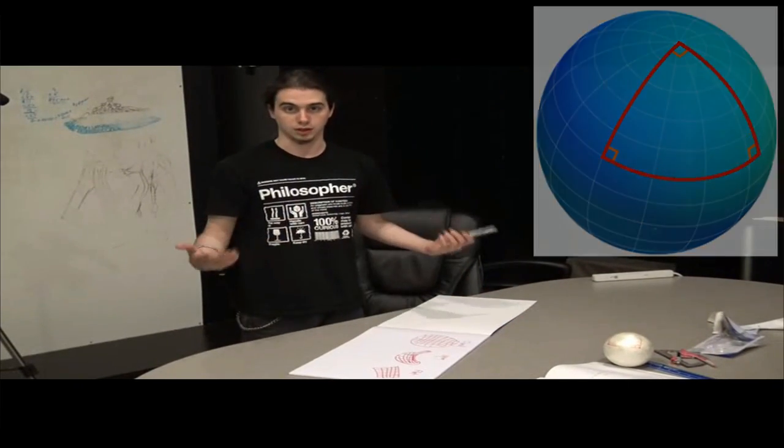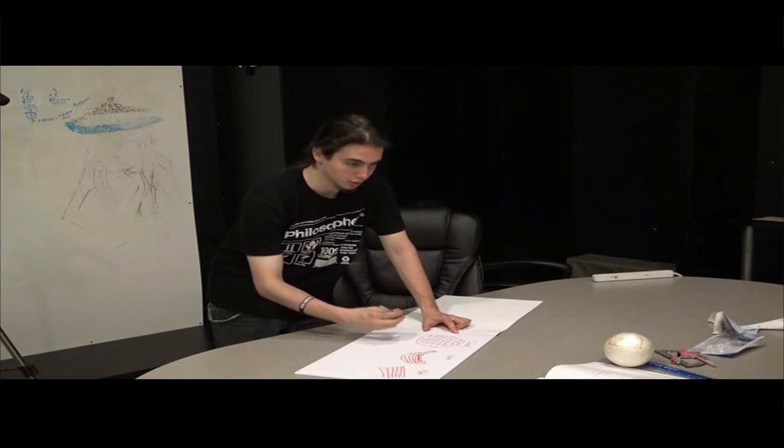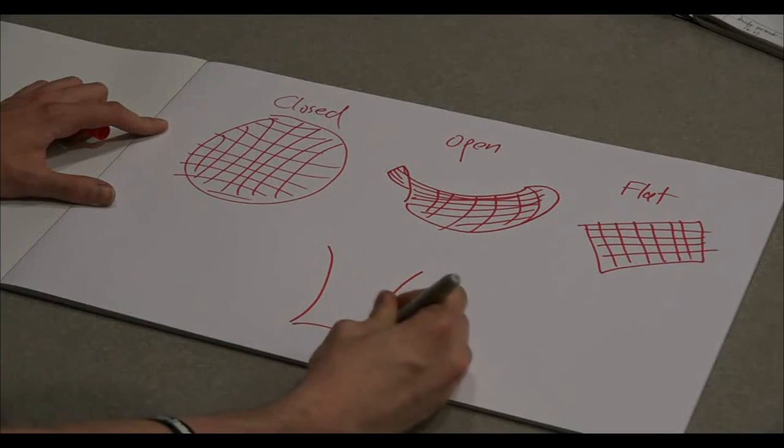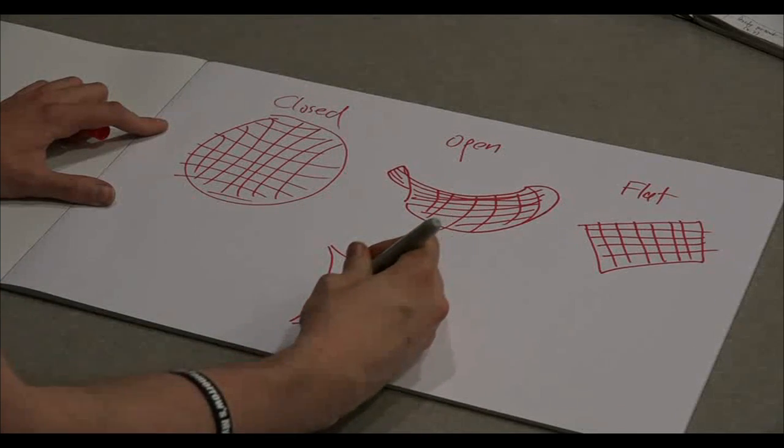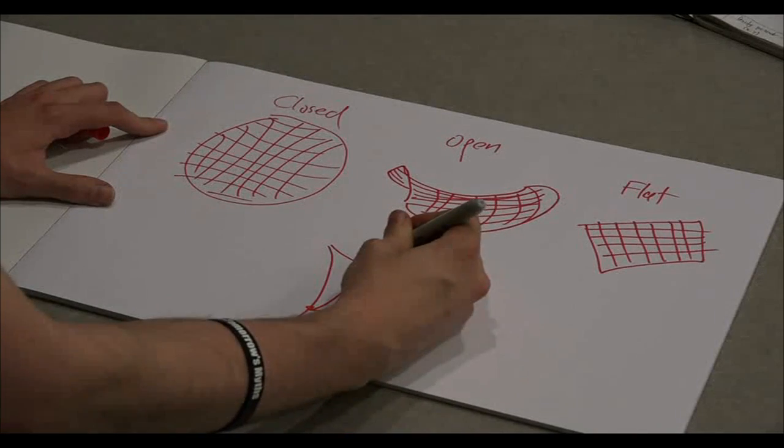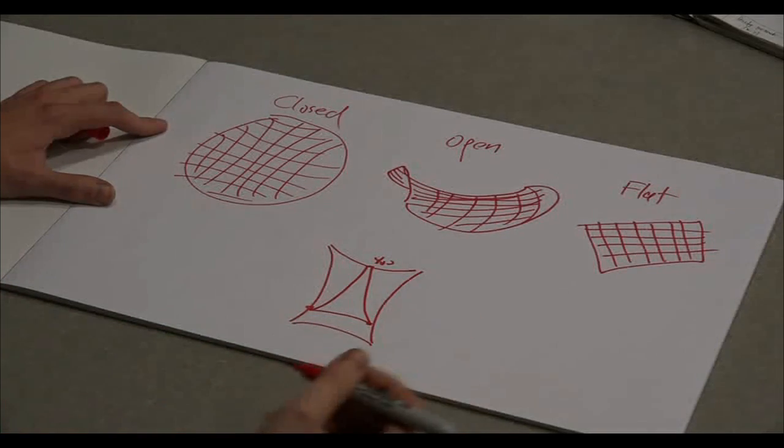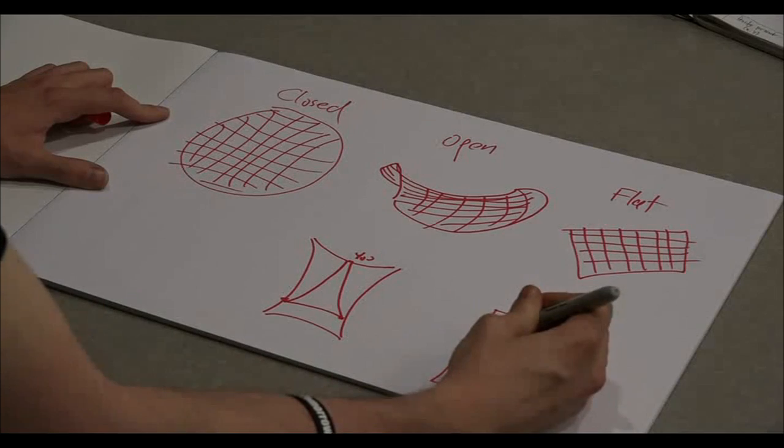In a closed universe you get triangles with possibly three right angles. In an open one, if we're looking at it from the top, the lines converge. So this is an observer here at the end, that's you, and then here is whatever field of view you're looking at. In a flat universe it's just normal triangles, Euclidean, pretty simple.